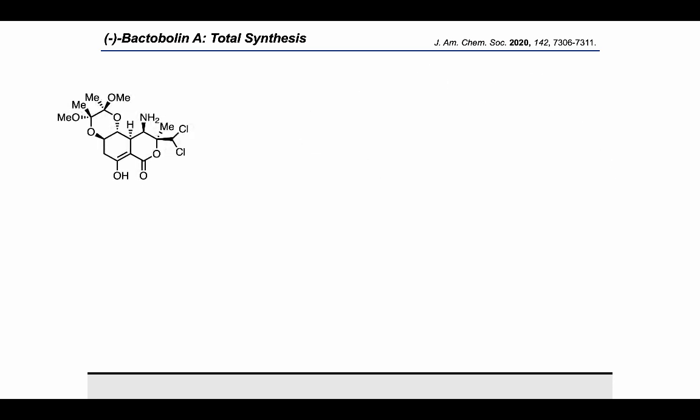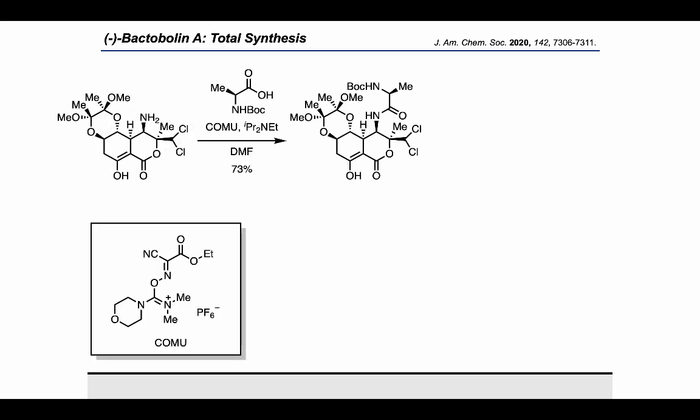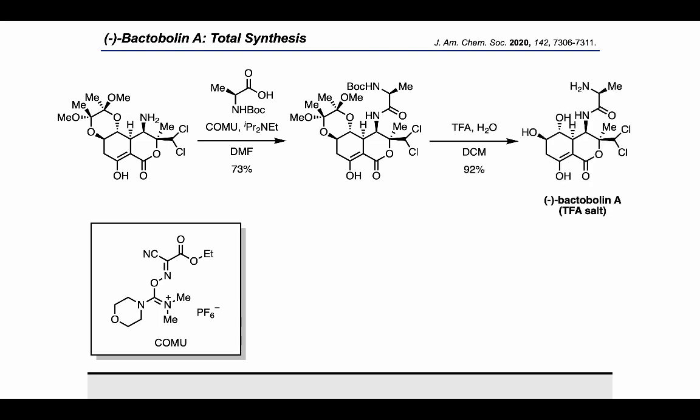By treating the amine with a protected amino acid coupling partner and the uronium coupling reagent COMU, they got the amide to form in good yield. Then, simply treating with TFA removed the Boc group and deprotected the diol on the western side of the molecule to provide the trifluoroacetate salt of the target.